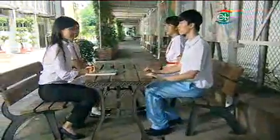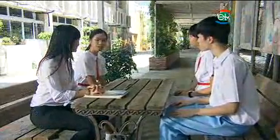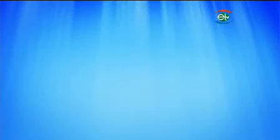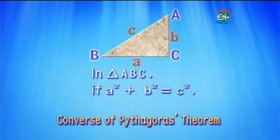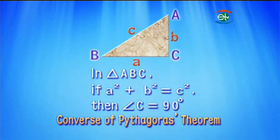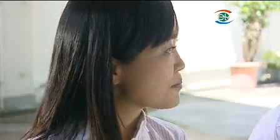Do you know that Pythagoras theorem can be used in a converse way? The converse of Pythagoras theorem states that if the sum of the squares of the two shorter sides of a triangle equals the square of the third side, then the triangle is a right angled triangle, and the angle opposite the longest side is a right angle. In geometry, we often use the converse of Pythagoras theorem to prove that two lines are perpendicular.